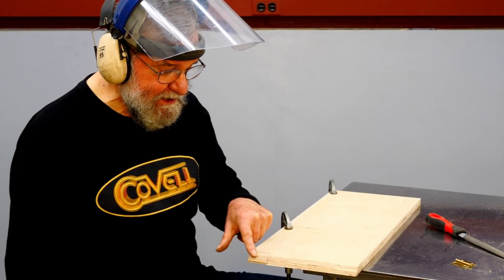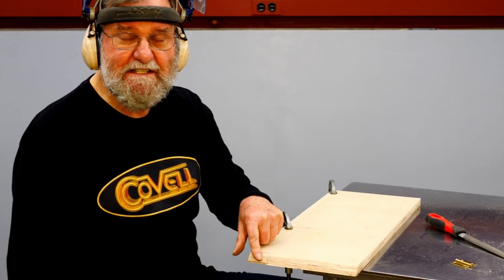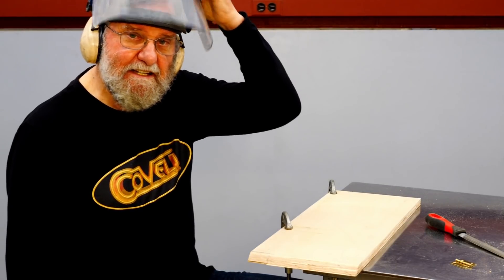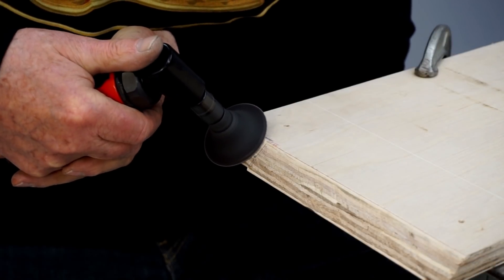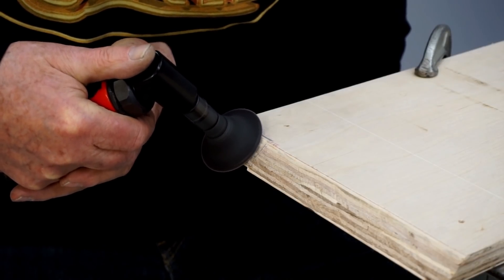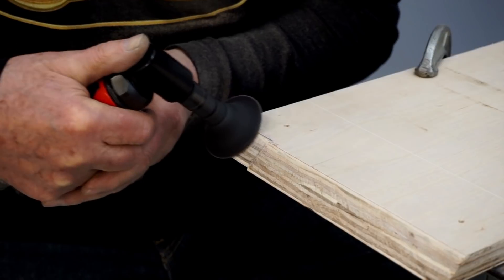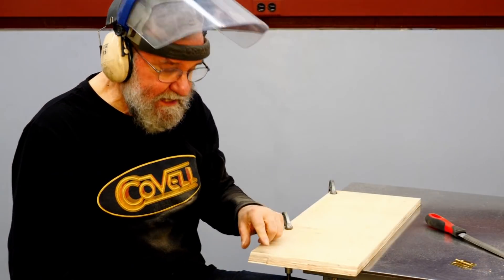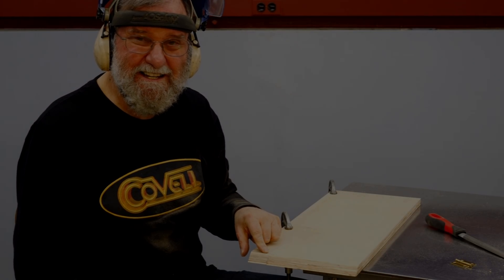So I'll file away the notch on this side as well. I just discovered that I need to remove a little material off this face as well, so I'll do that by sanding. That should do it. And I'll do the same thing on the other side.